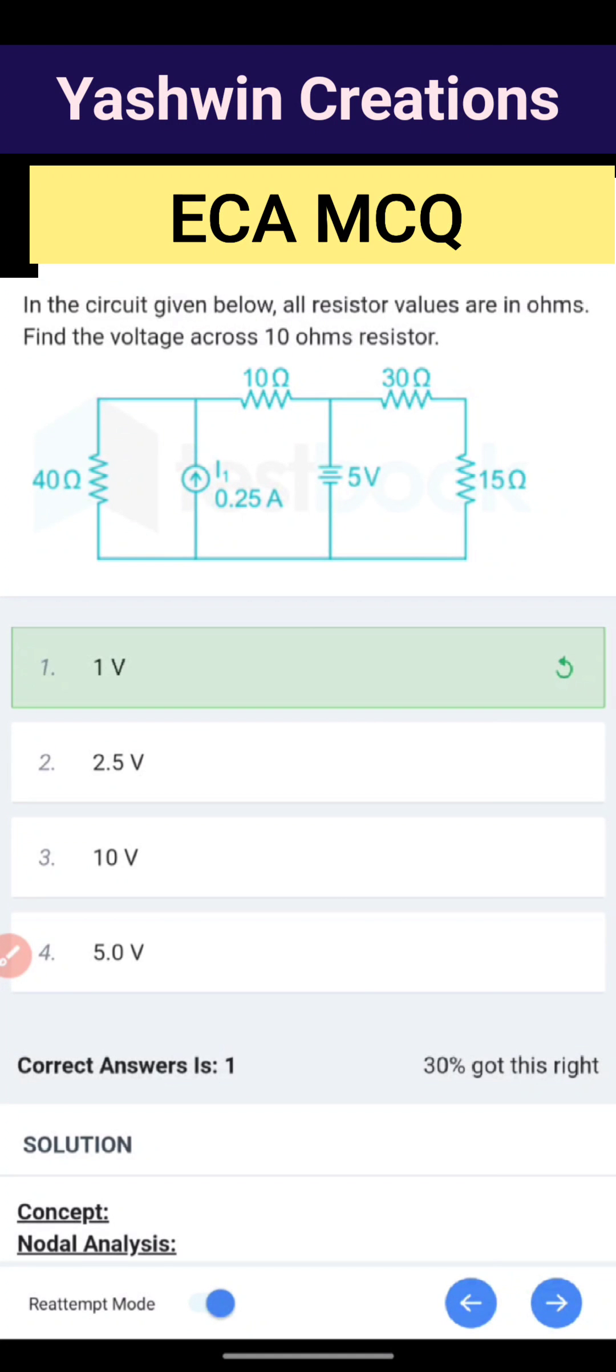Hi everyone, MCQ on electric circuit analysis. Topic is nodal analysis. We shall discuss the problem: In the circuit given below, all resistor values are in ohms. Find the voltage across the 10 ohm resistor.